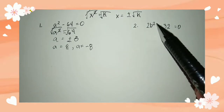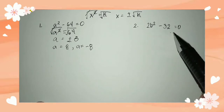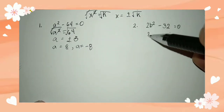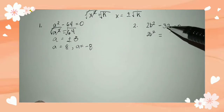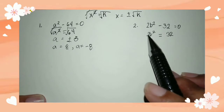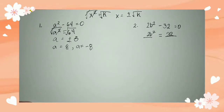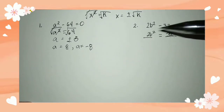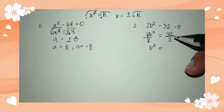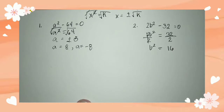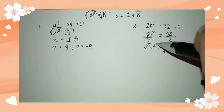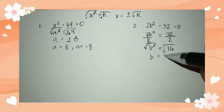Example number 2: we have 2b squared minus 32 is equal to 0. First, transpose negative 32 to the other side so it becomes positive 32: 2b squared equals 32. Since there is still a numerical coefficient, divide both sides by 2 to eliminate it. Cancel: b squared equals 16. Then put a square root. Square root of b squared equals square root of 16. Cancel out. The answer is b is equal to positive and negative 4.